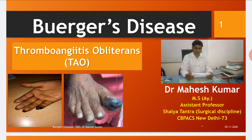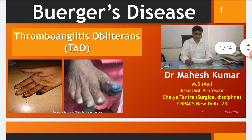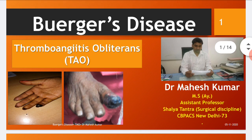Buerger's disease is thromboangitis obliterans. This term is made up of three parts: thrombo, angitis, and obliterans. Thrombo means relating to clotting of blood; angitis means inflammation of the wall of small blood vessels, also known as vasculitis; and obliterans means producing obstruction due to inflammation and fibrosis. So thromboangitis obliterans is inflammation of the wall of small blood vessels producing obstruction due to inflammation and fibrosis — that causes Buerger's disease.